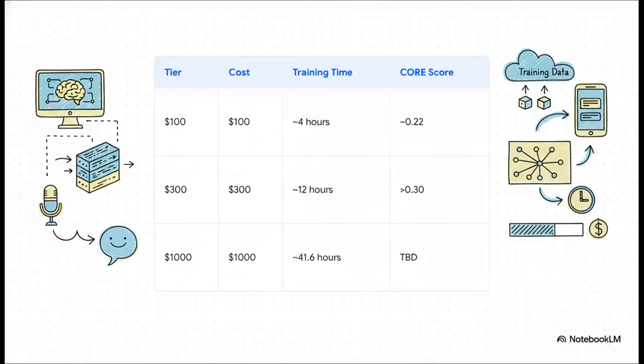So, the project has a few different tiers depending on your budget. For just a hundred bucks and about four hours of training time, you get a pretty solid base model. But what's really amazing is this $300 tier. In about 12 hours, it creates a model that actually scores a little bit higher than the classic GPT-2. That is a huge milestone for a project you can build entirely from scratch.